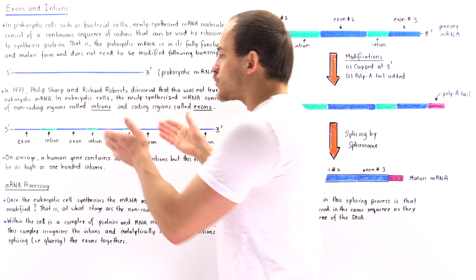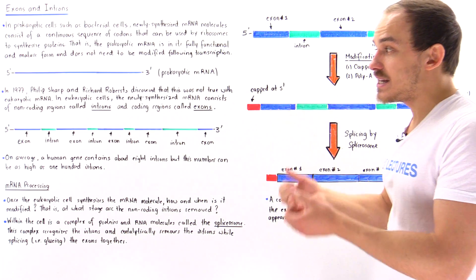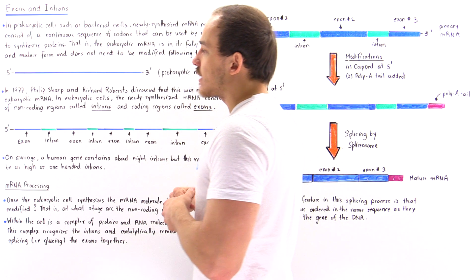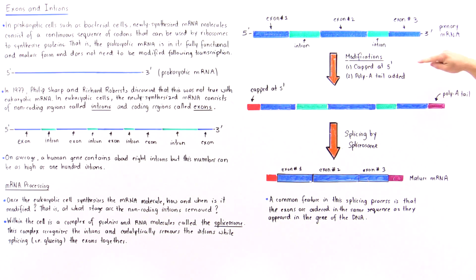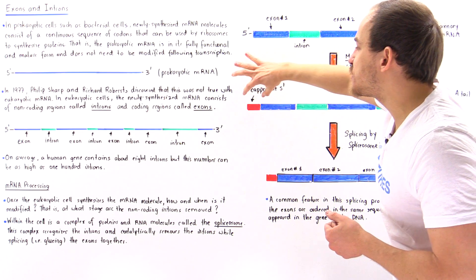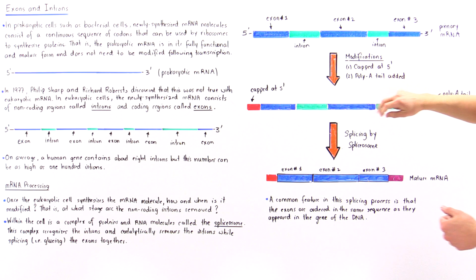Now, on top of essentially removing the introns, these mRNA molecules in our cells and other eukaryotic cells are modified in two other ways. We basically cap the beginning with a special type of nucleotide sequence, and that's called the capping process. And at the end of that mRNA, we add an additional sequence that consists of polyadenosine nucleotides, as shown in the following diagram.